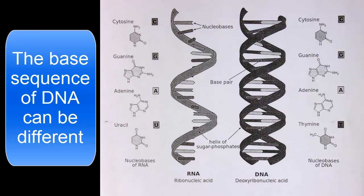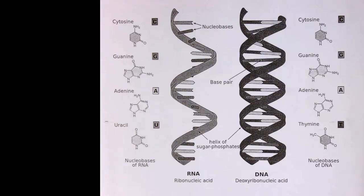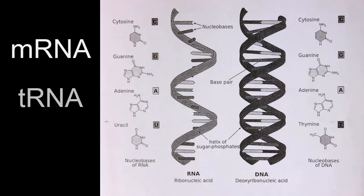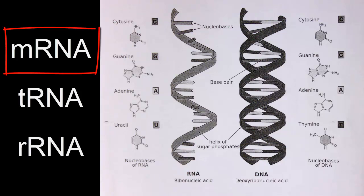There are three types of RNA: messenger RNA, transfer RNA, and ribosomal RNA. Messenger RNA copies the information in a gene during transcription and takes that information to the cytoplasm to a ribosome for translation into a specific protein.